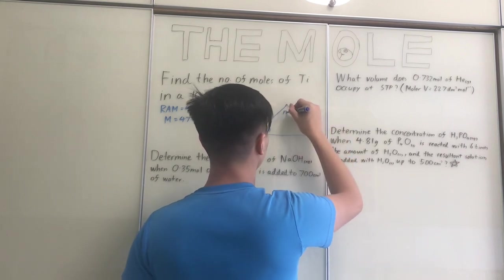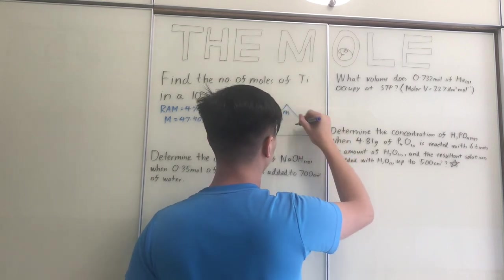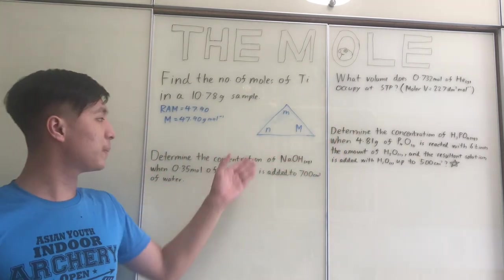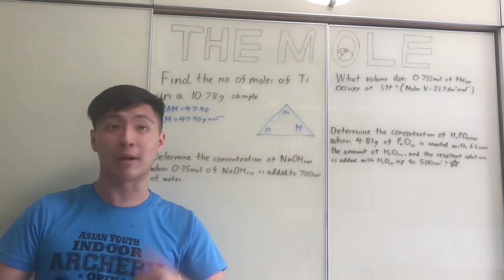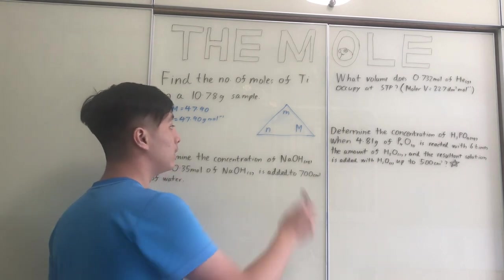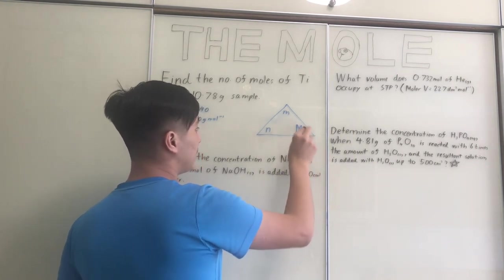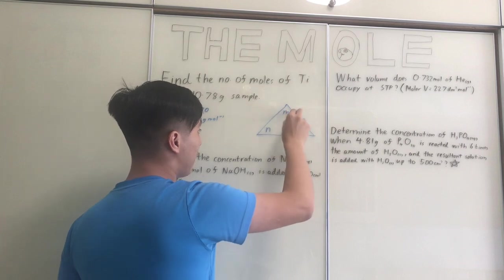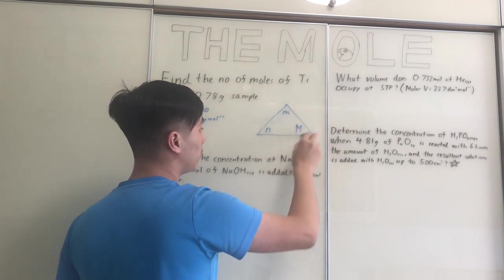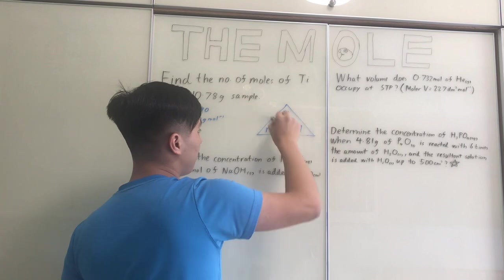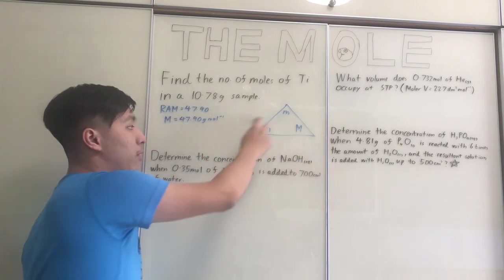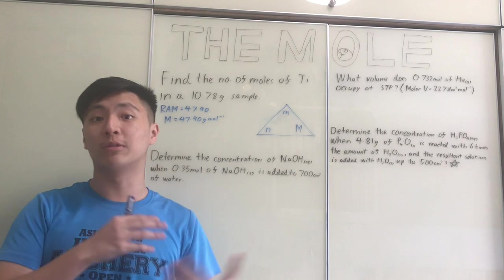Using the triangle: N × M = little m, M = m over N, and little m over molar mass equals the number of moles. We know the molar mass and the mass, so: N = 10.78 g ÷ 47.90 g mol⁻¹ = 0.225 moles.